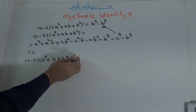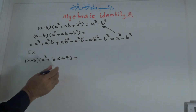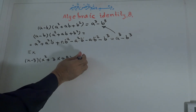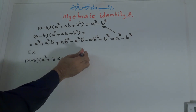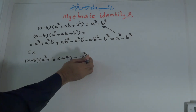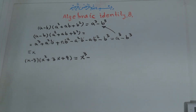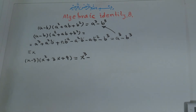What is the result? The result, or the product, is like this: the first term to the power of 3 means X³, minus the second term to the power of 3 means 3 to the power of 3. 3 times 3 is 9, and 9 times 3 is 27. So the answer is X³ minus 27.